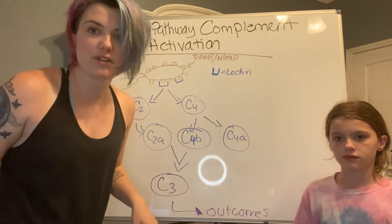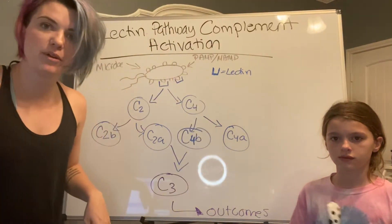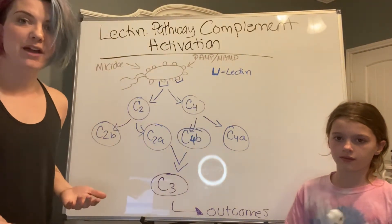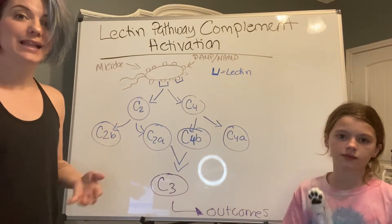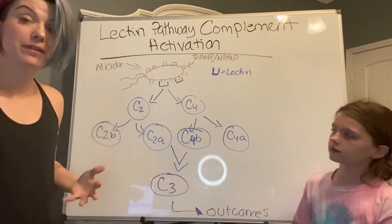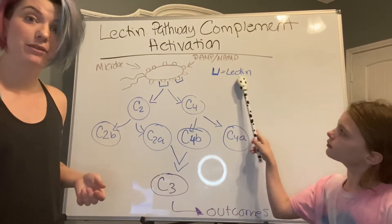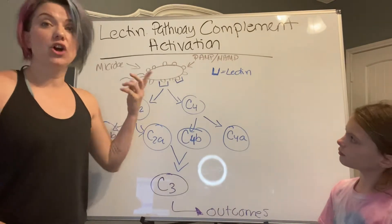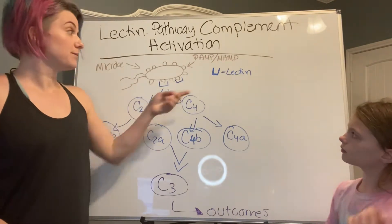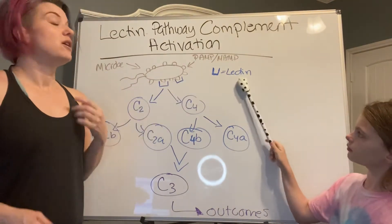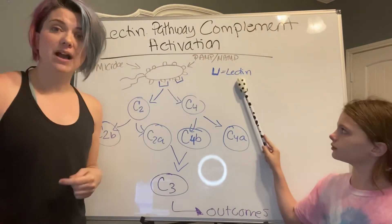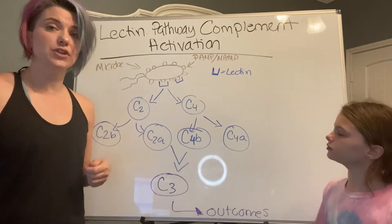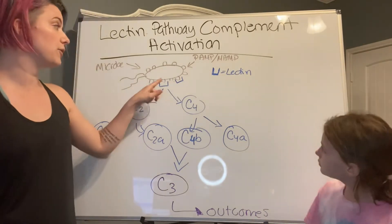Hey guys, we're still here talking about complement activation. The last pathway we're going to talk about is the lectin pathway. In your body, you have things called lectins, which can bind to carbohydrates containing mannose on the surface of microbes.